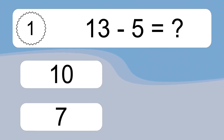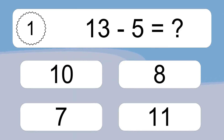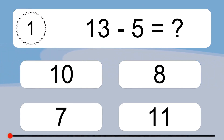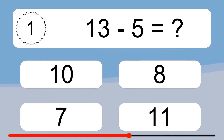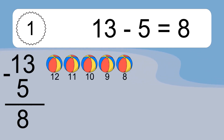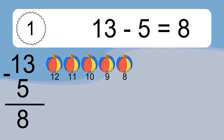13 minus 5 equals what? 13 minus 5 equals 8. Let's count it: 12, 11, 10, 9, 8.